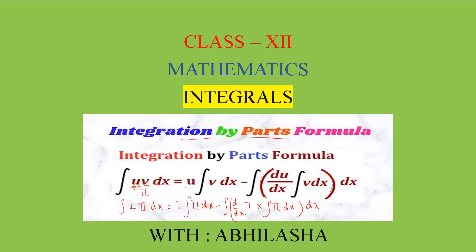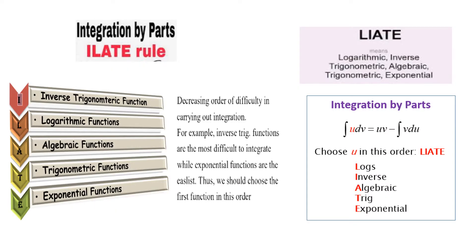The ILATE rule is used here to choose our first and second functions. In order of preference, we choose our first function so that the integration is easy. For integration by parts, ILATE is helpful in choosing which function is taken as first, decided by the difficulty we face while integrating a particular function.